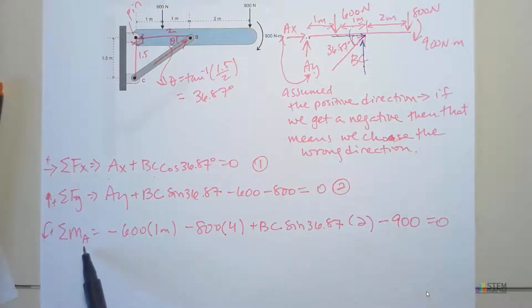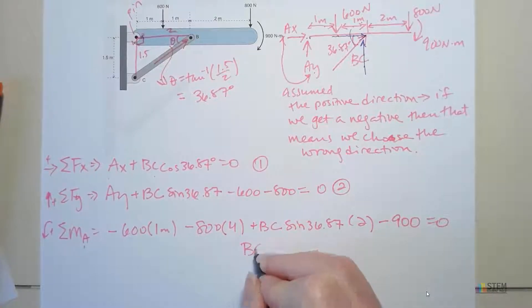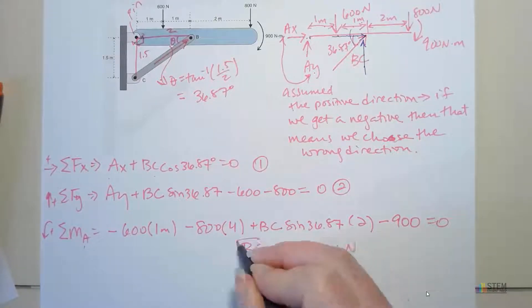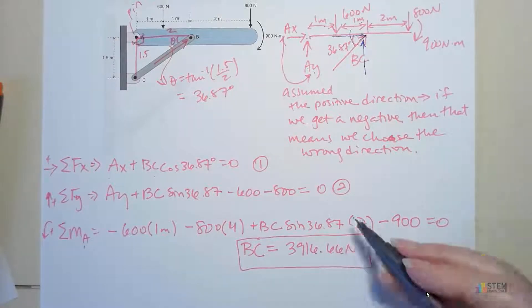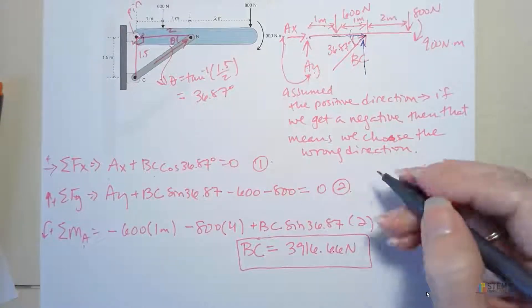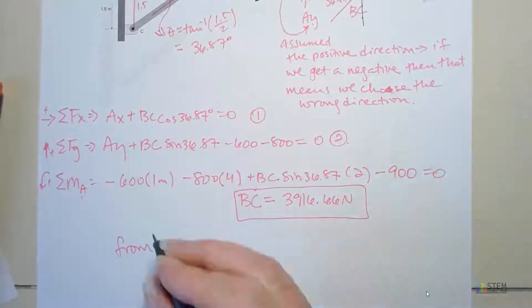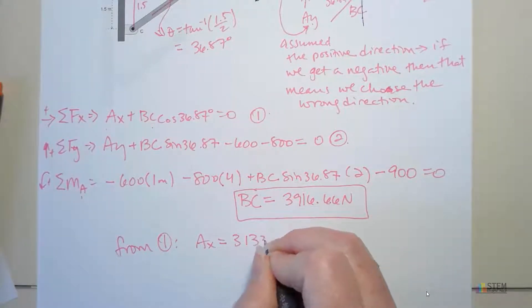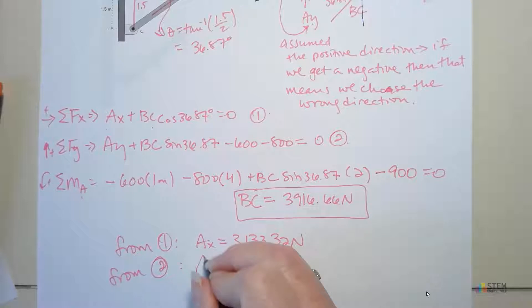Now notice through the choice of point A for our moment, we got rid of two unknowns. Now we only have one unknown in our equation, which is good, right? So now we can solve for BC. And if you do that, you get 3,916.66 newtons. Positive means this was the correct direction. Now you're going to take this number, plug it in to equations 1 and 2, and you can get the other two unknowns. So from equation 1, you'll get AX equals 3,133.32 newtons. And then from equation 2, you're going to get AY equals negative 950 newtons.